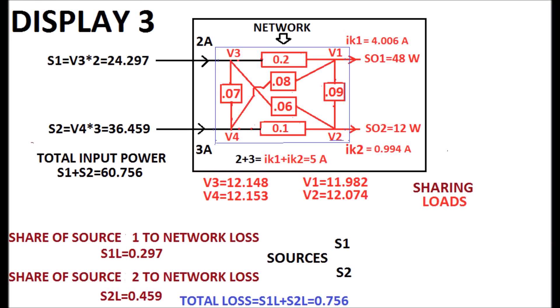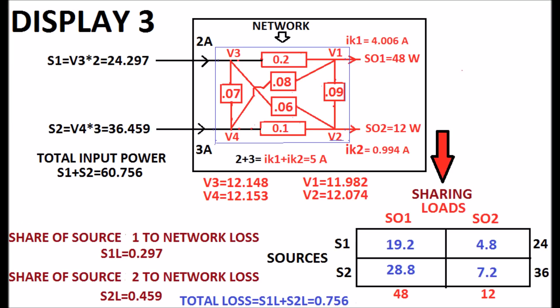The sources 1 and 2 are at different nodes 3 and 4 respectively, feeding power to the loads SO1 and SO2. In this case also, the sharing of each load by each source is the same.